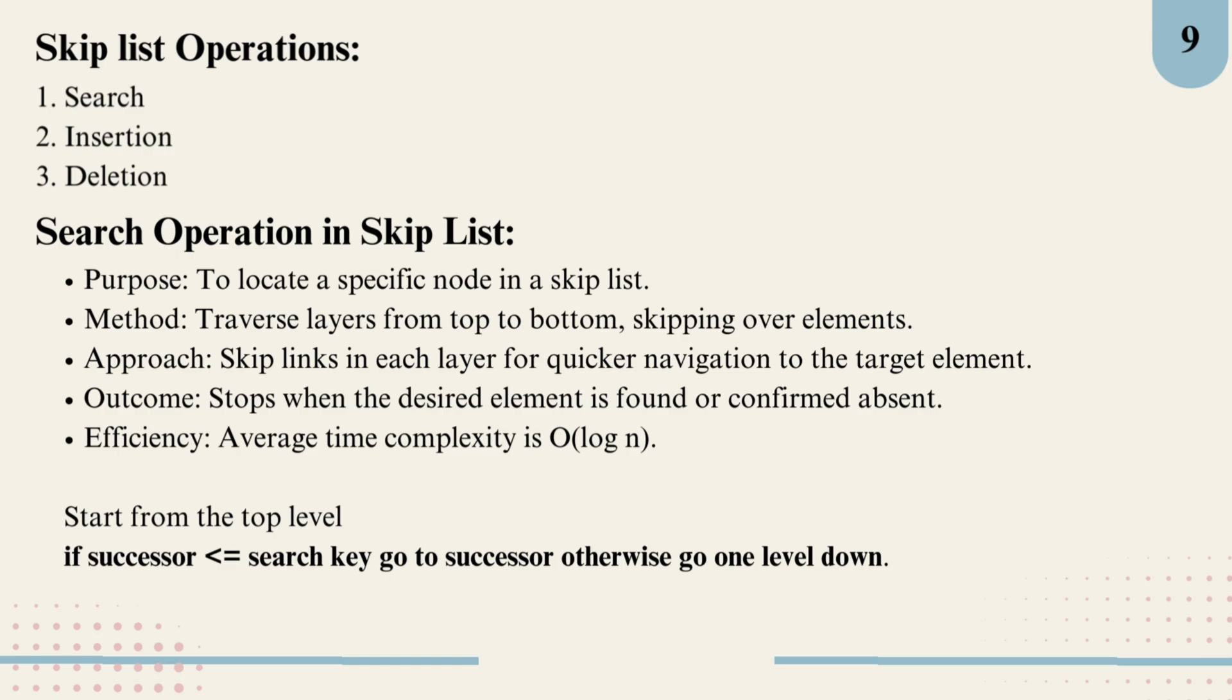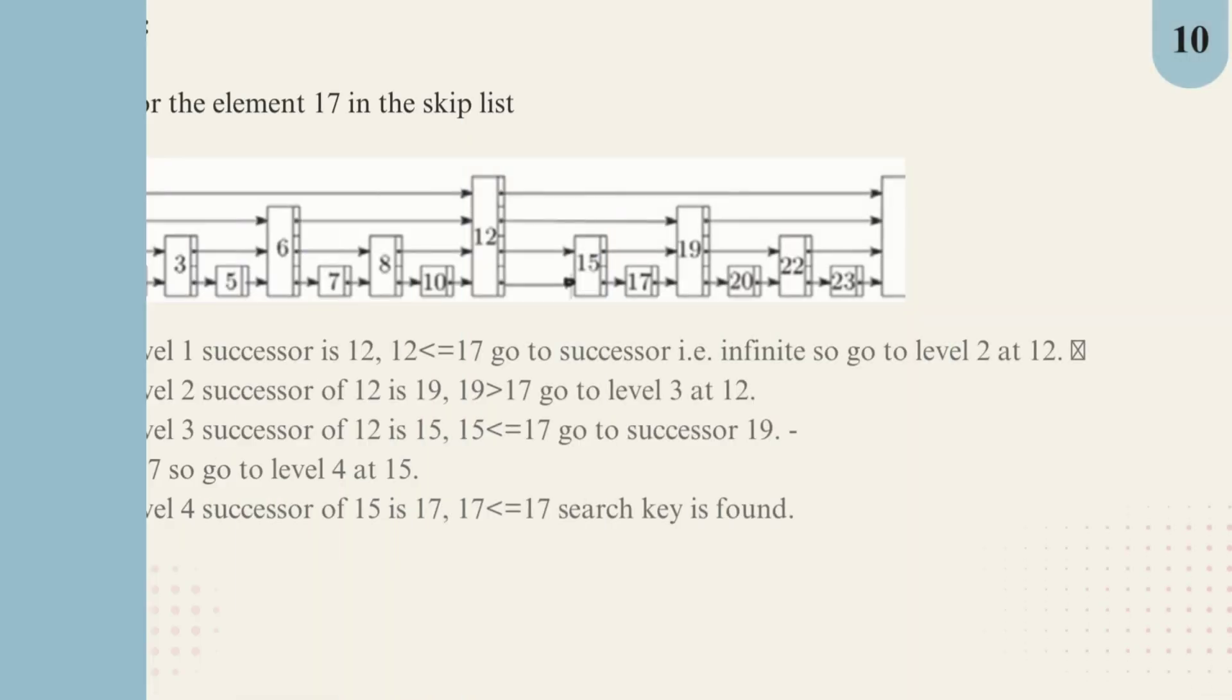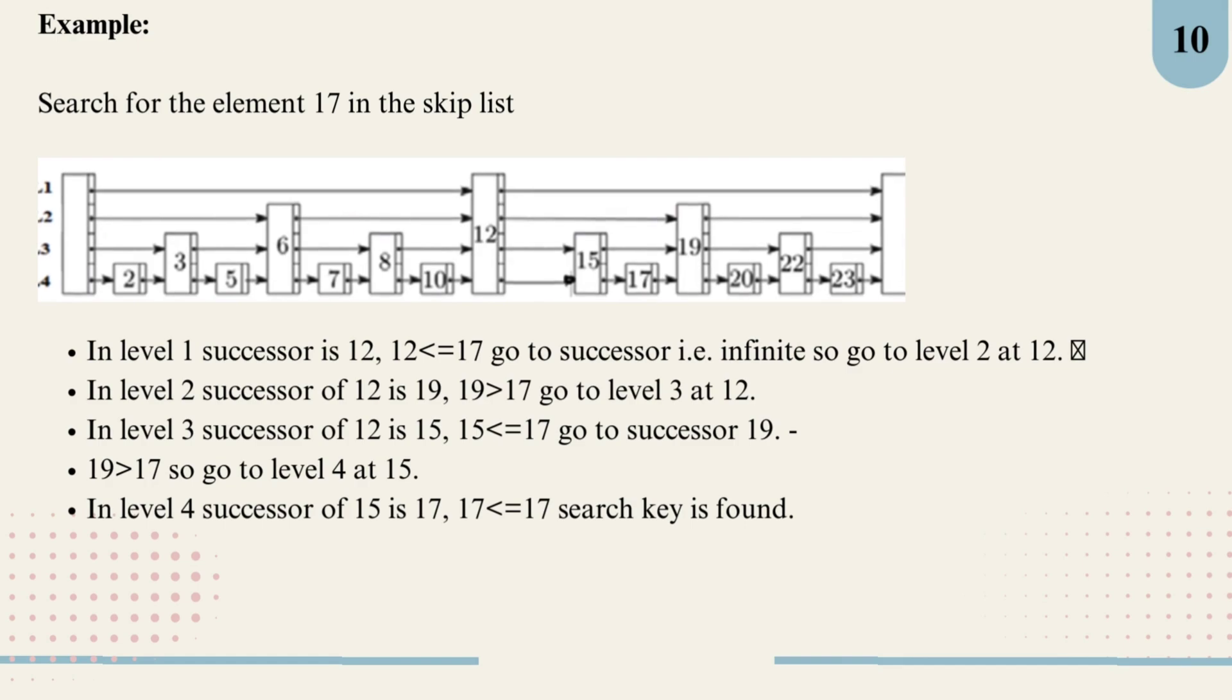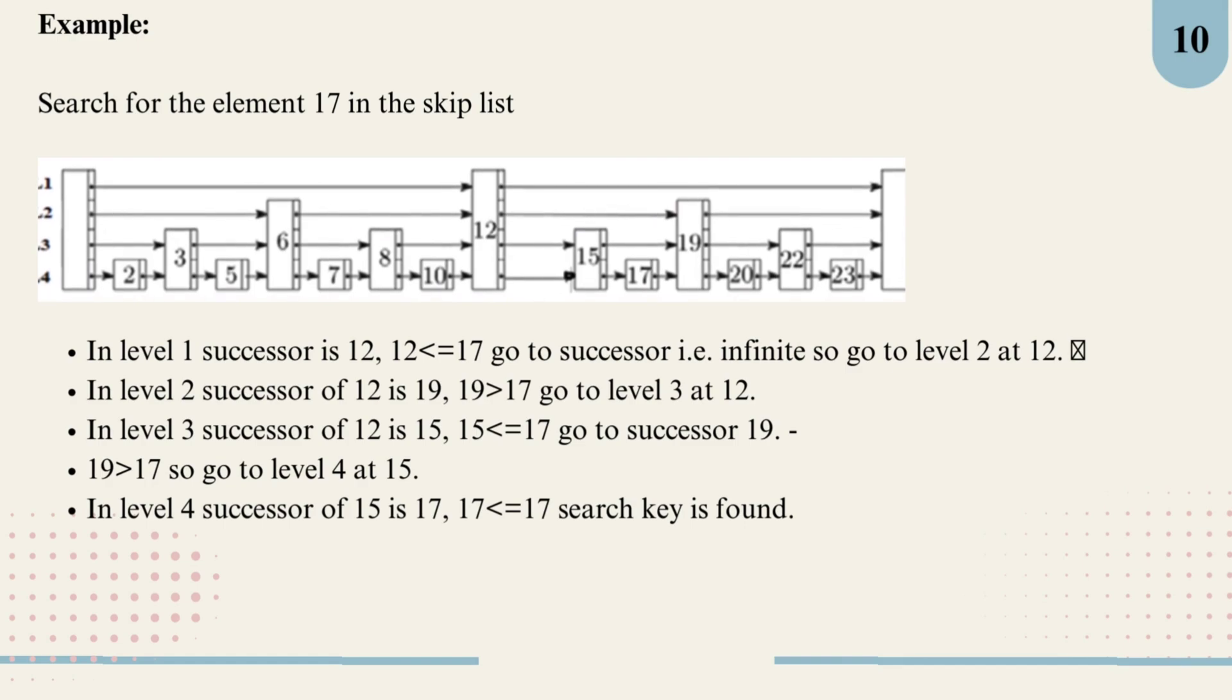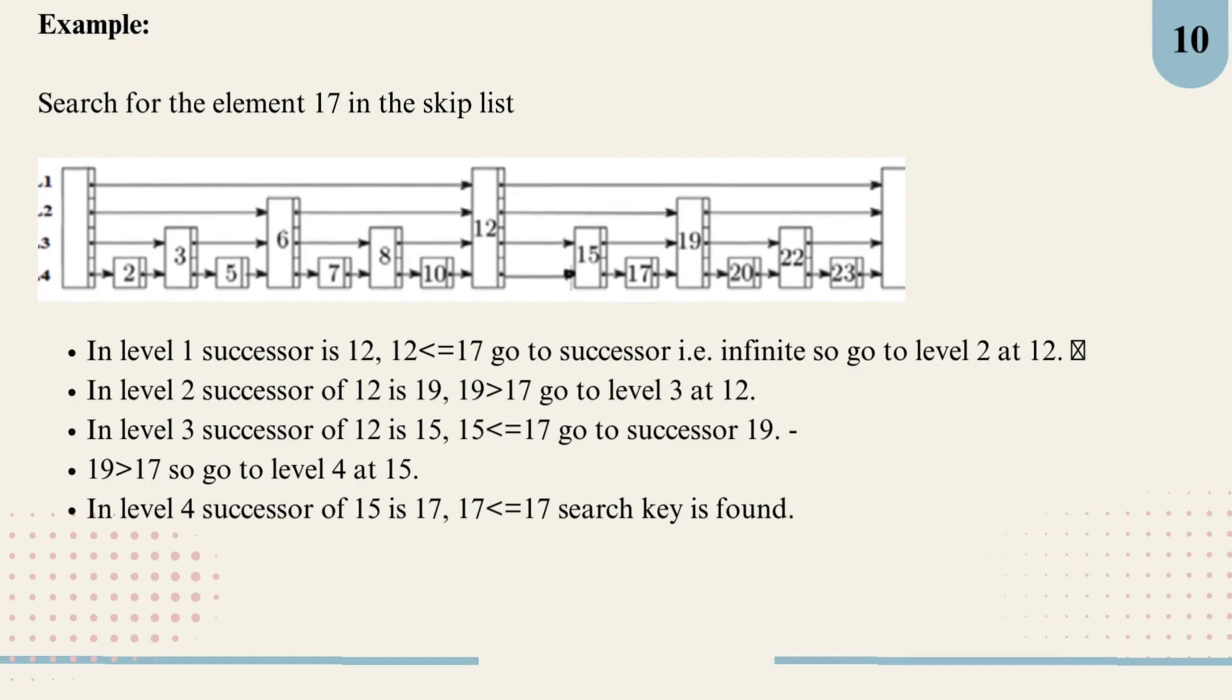Let's go through a quick example to see how a skip list search works in action. Imagine we are searching for element 17 in our skip list. At level 1, we start at the top. The successor here is 12, and since 12 is less than or equal to 17, we move to this successor. At 12 we reach the end, so we go down to level 2. At 12, level 2, the successor of 12 here is 19.